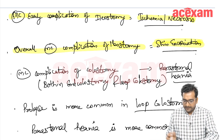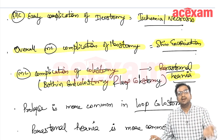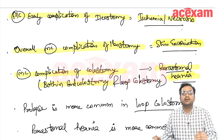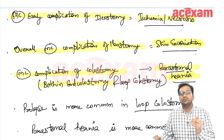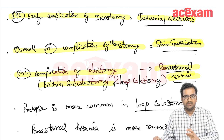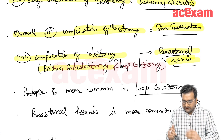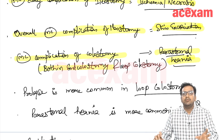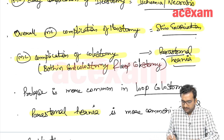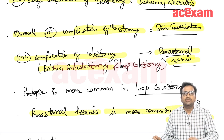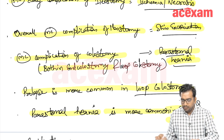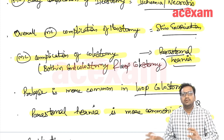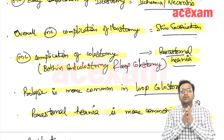The most common complication of colostomy is parastomal hernia, seen in both end colostomy and loop colostomy. Parastomal hernia is more common in end colostomy, while prolapse is more common in loop colostomy. Even when considering only loop colostomy, parastomal hernia is still more common than prolapse.